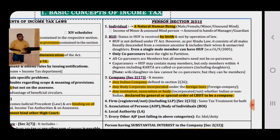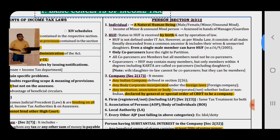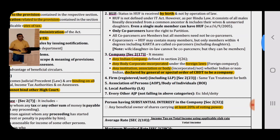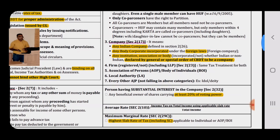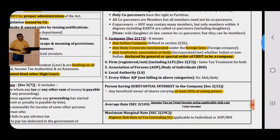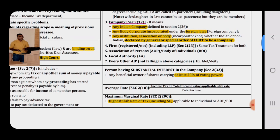Definition of Person is given under Section 2(31) and is divided into 7 categories: (1) Individual; (2) HUF — Hindu Undivided Family; (3) Company; (4) Partnership Firm including LLP; (5) Association of Persons and Body of Individuals; (6) Local Authority; and (7) Artificial Juridical Person.